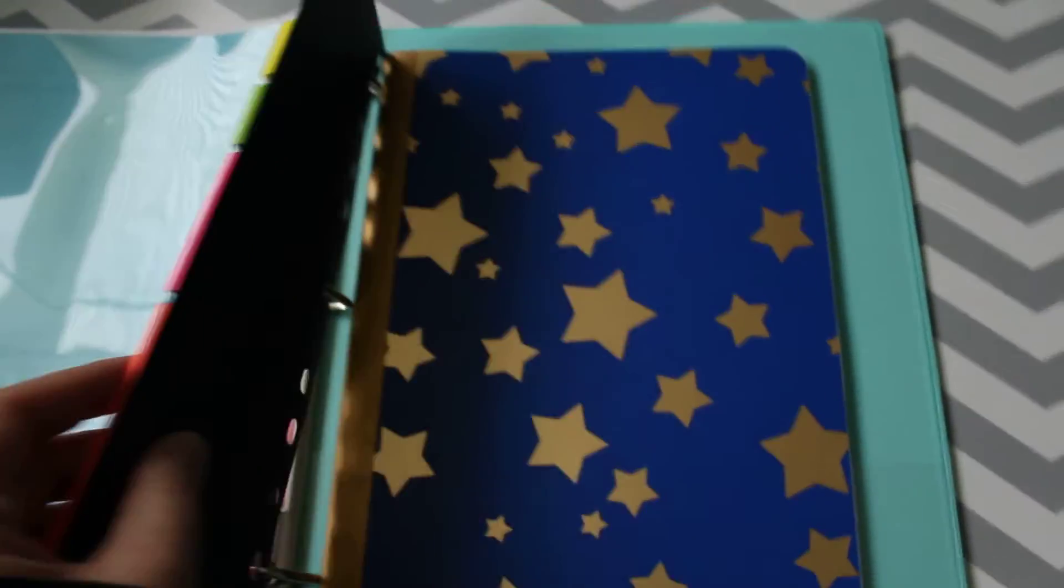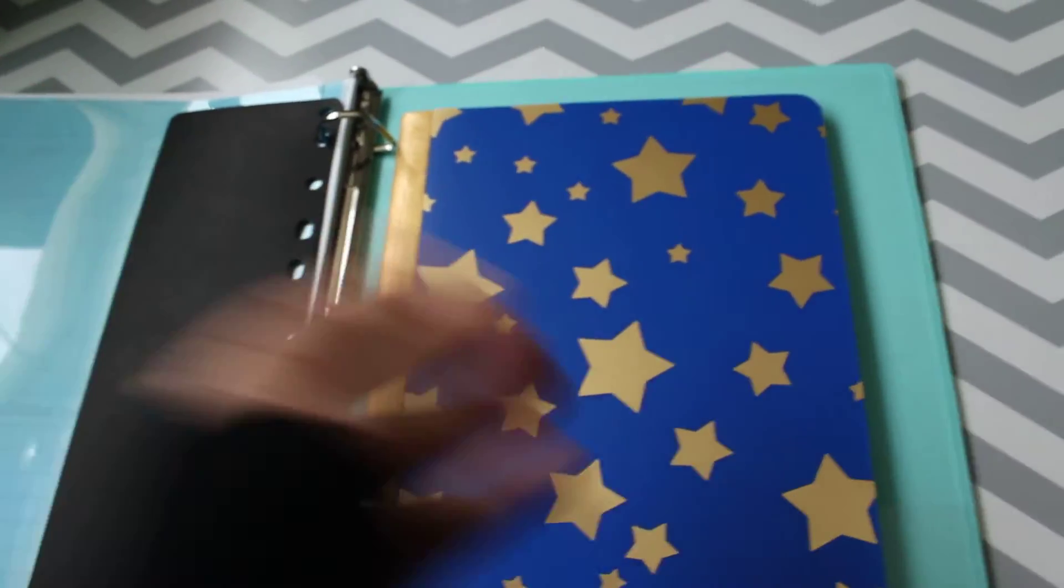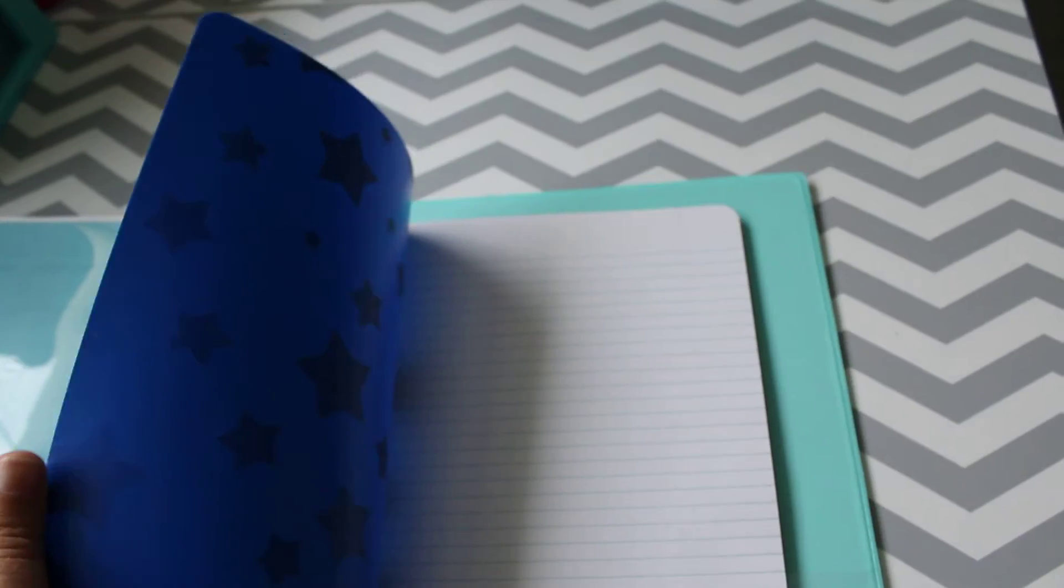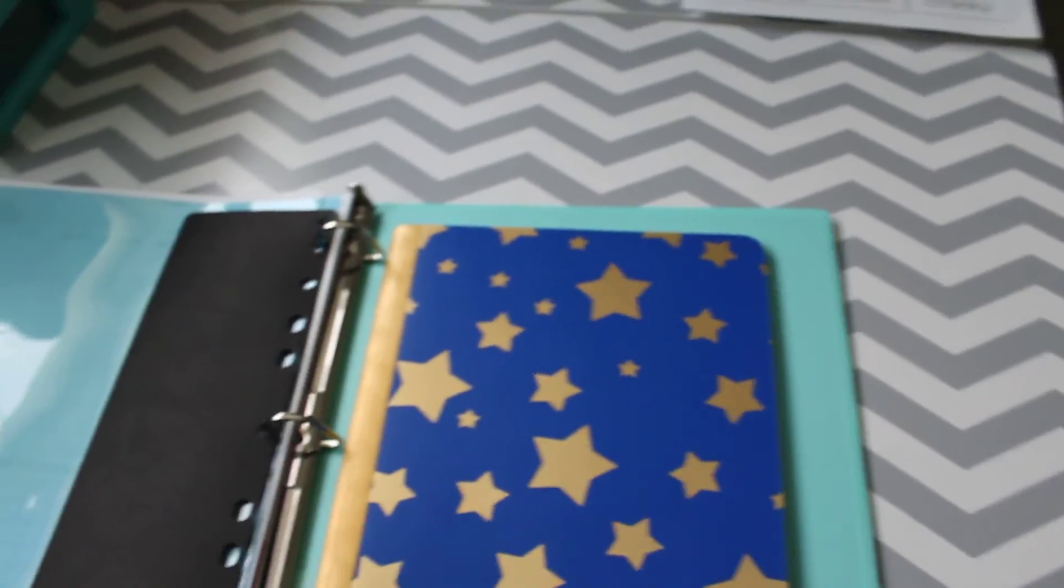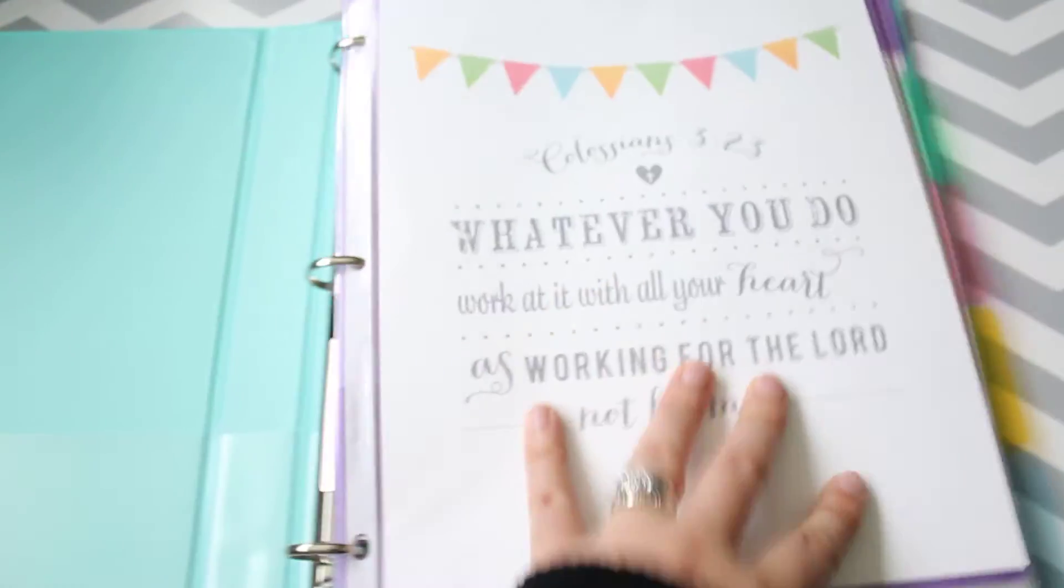They each got to pick out a little composition notebook that we're going to use for journals. They can journal while I'm doing read aloud. I'm sure they'll write either just random letters or pictures or whatever, but it'll be good practice for them to sit quietly and listen and start learning to journal and do some quiet time.